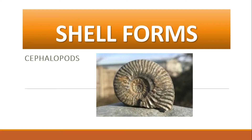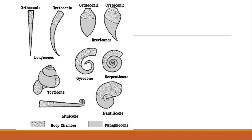Today let's get started with the shell forms, or the different shapes of shells in cephalopods. In cephalopods, different types of shells are found with different shapes and forms — some are helicoids, some are plane spirals, some are straight, some are slightly coiled. The first one is your orthoceracone.